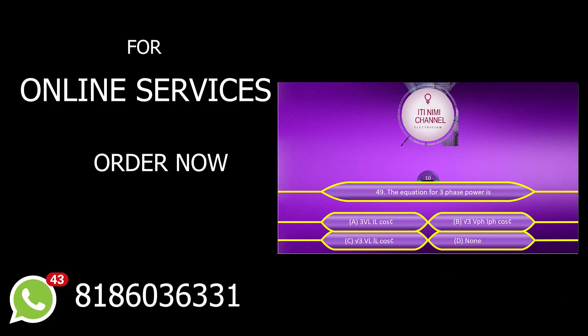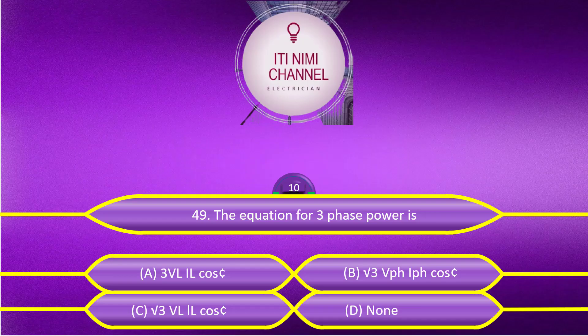The equation for 3-phase power is: Option A, 3 × line voltage × line current × cos θ. Option B, √3 × phase voltage × phase current × cos θ. Option C, √3 × line voltage × line current × cos θ. Option D, none.